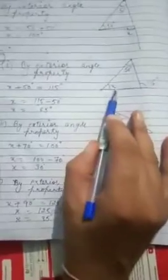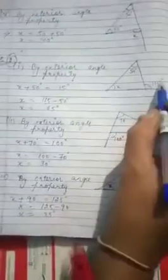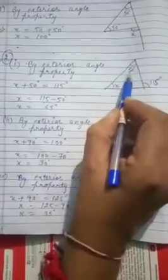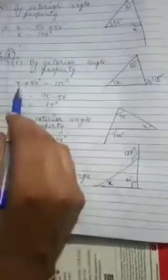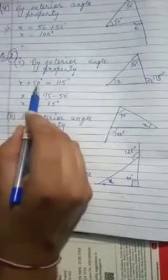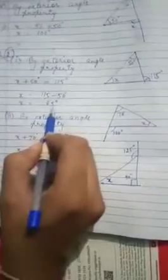Now moving on to our next question, that is question number two. Now this angle is not given. This angle is to be found out. So I am here to find out this angle now. X plus 50 equals to 115. Again an exterior angle property. So 50 is going to be subtracted from 115. So X comes 65 degrees.